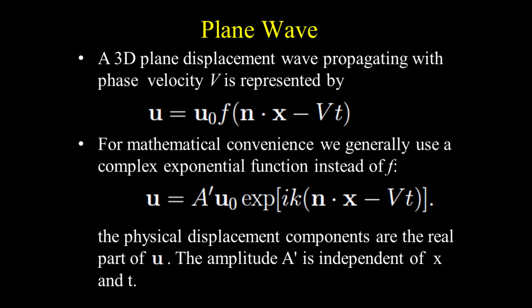Here again is the formula of a 3D plane displacement wave propagating with phase velocity V. For mathematical convenience, we generally use a complex exponential function instead of the arbitrary function F. A plane harmonic displacement wave propagating with phase velocity V in a direction defined by the unit propagation vector N — the physical displacement components are the real part of U. This is a special case of a time harmonic, monochromatic displacement wave. The amplitude A is independent of particle position and time.